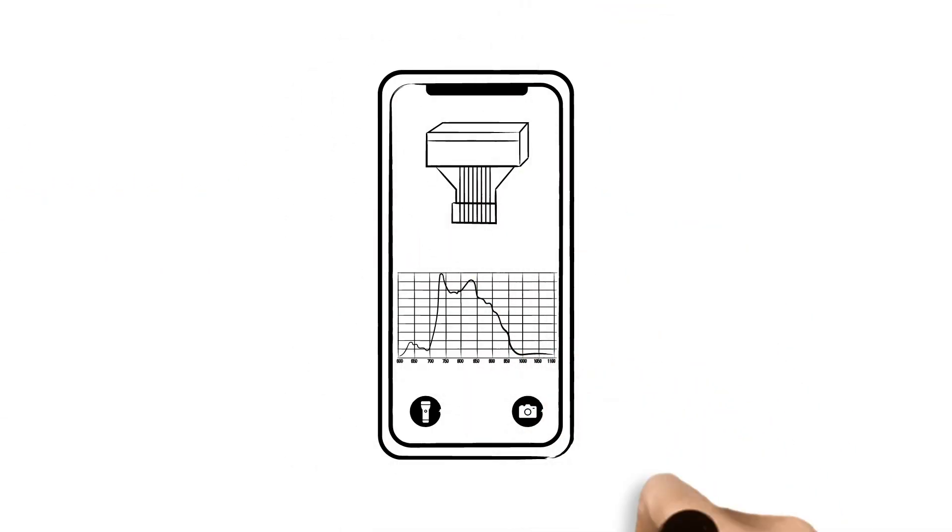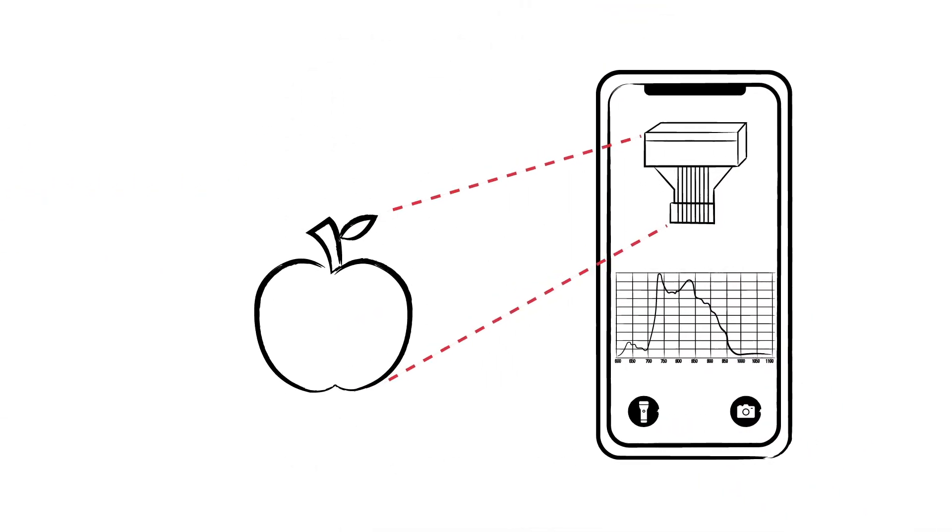But at Hamamatsu, through our expertise in nanotechnology, we've successfully taken our spectrometer designs and made them micro-sized. We've even made spectrometers that are small enough to be used in a smartphone.